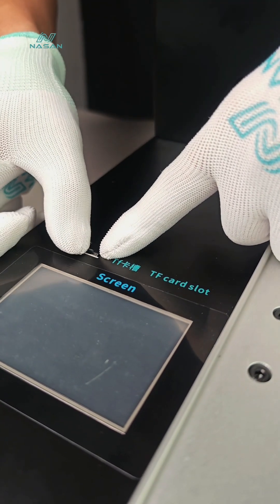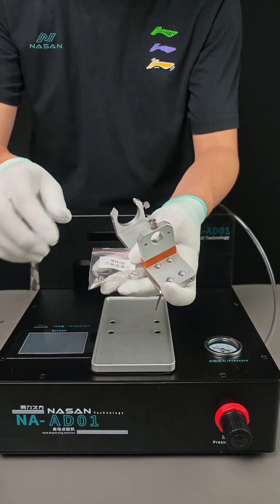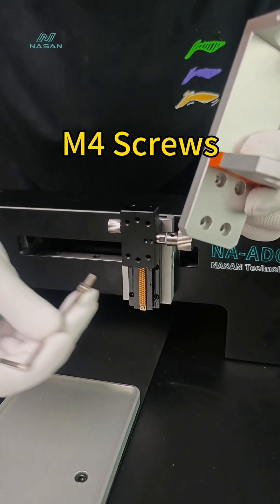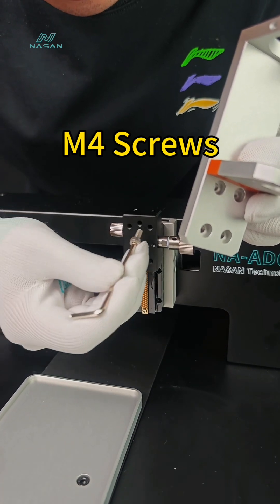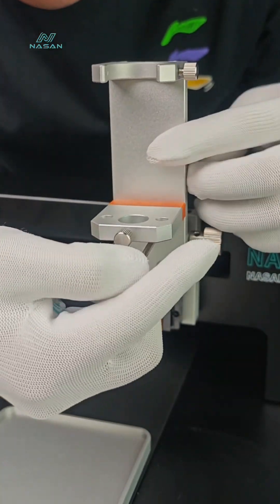And now let's install the AB glue bracket and barrel. Use M4 screws here. We will fix screws to these four holes. Suggest to install two screws diagonally first.